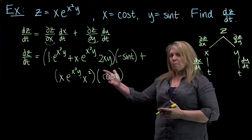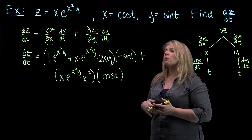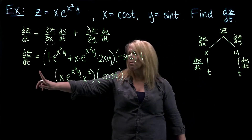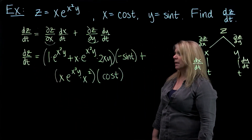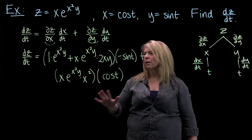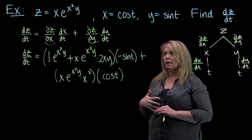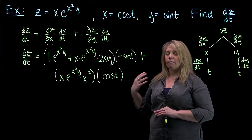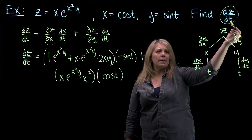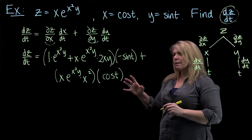At this point I have a messy answer, but I do have an answer for dz/dt. Generally you'd like it cleaned up and also expressed entirely in terms of the terminal variable t. So notice I have x's, y's, and t's in the expression. Depending on what I'm going to do next — if I'm plugging in a number for a derivative at a particular value — that's fine. But if I just want an expression for dz/dt, I'd like it all in terms of t. So I'm going to substitute in and do a little algebraic simplifying.